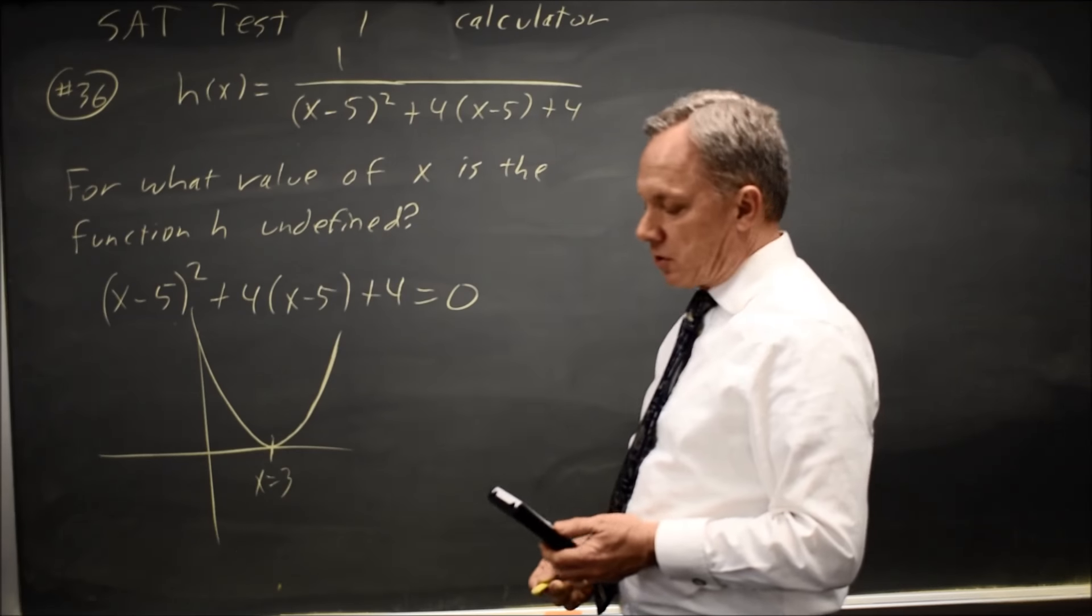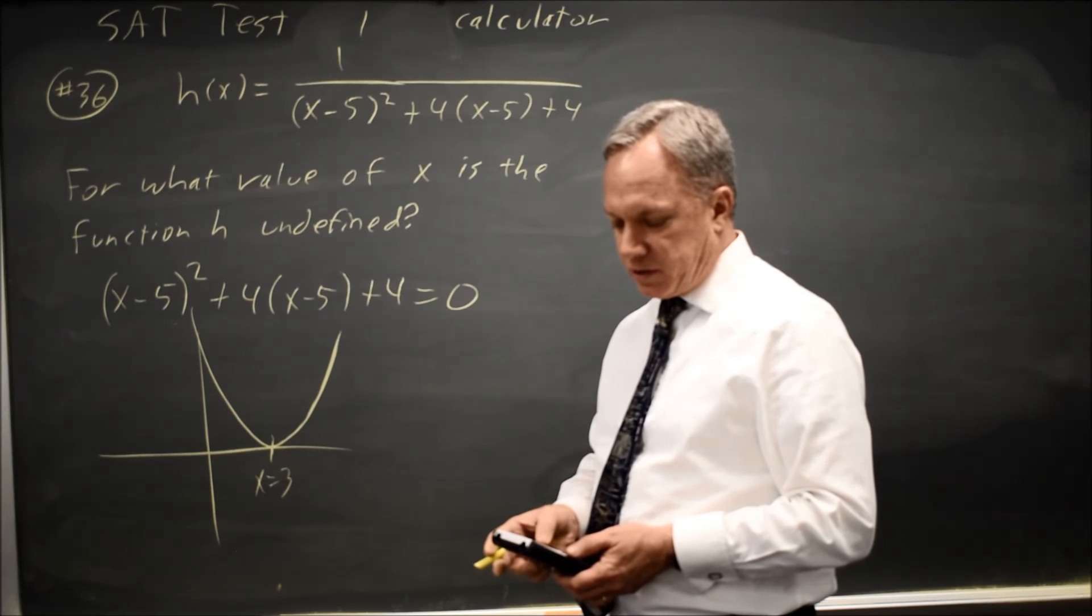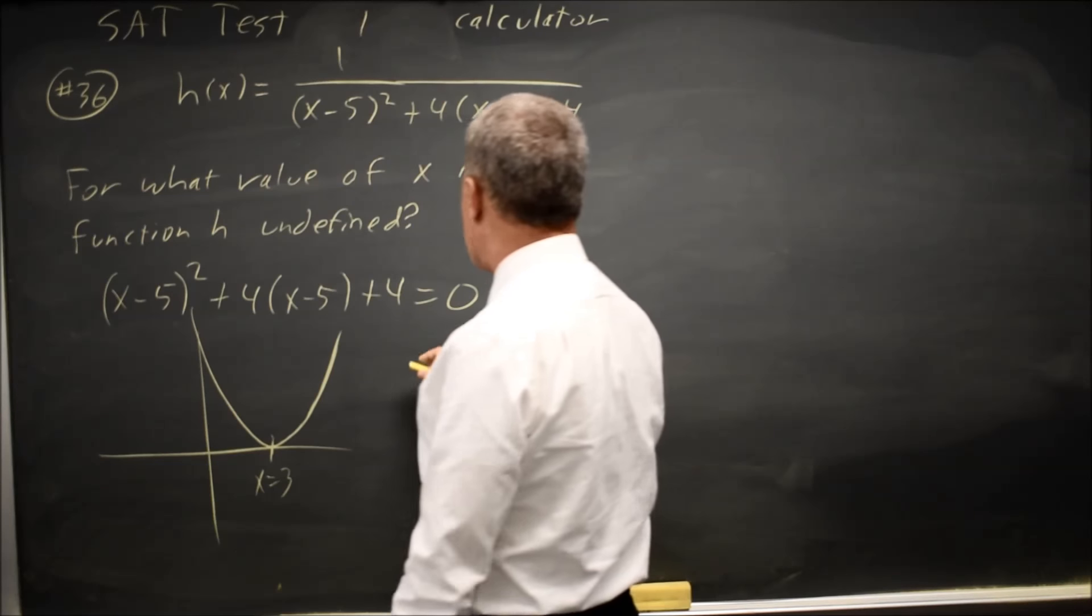So that function is 0 only at x equals 3. If I check the table of values, I can confirm that x equals exactly 3 works.